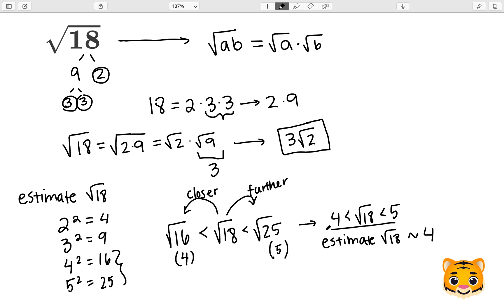So now we can look at our answer and we have the square root of 18 estimated to around 4. And we can see that this matches with an estimation of 3 root 2. So we have 3 times the square root of 2.